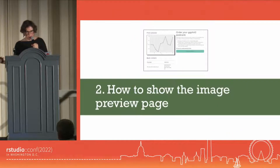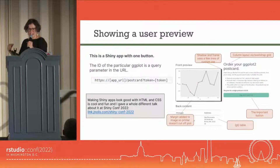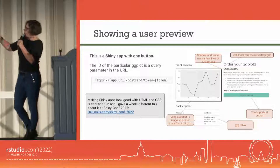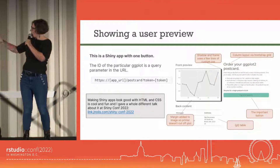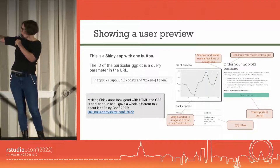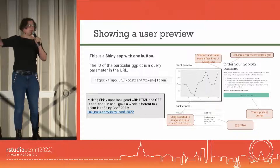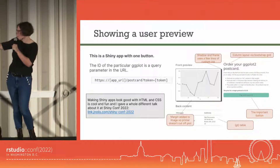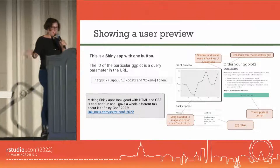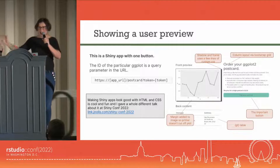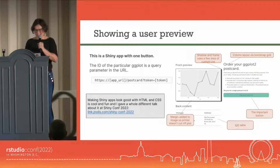So how do you show the image preview? Once we have the data uploaded to Shiny, this is actually just a Shiny app with one button. The URL has the token, which is the ID of the particular postcard you uploaded, and the Shiny app shows a different postcard depending on what your token is. I put a lot of work into the Bootstrap and CSS to make it all look pretty and get the margins on the postcard right. I have a whole separate talk about making Shiny apps look pretty that I gave at Shiny Conf 2022.